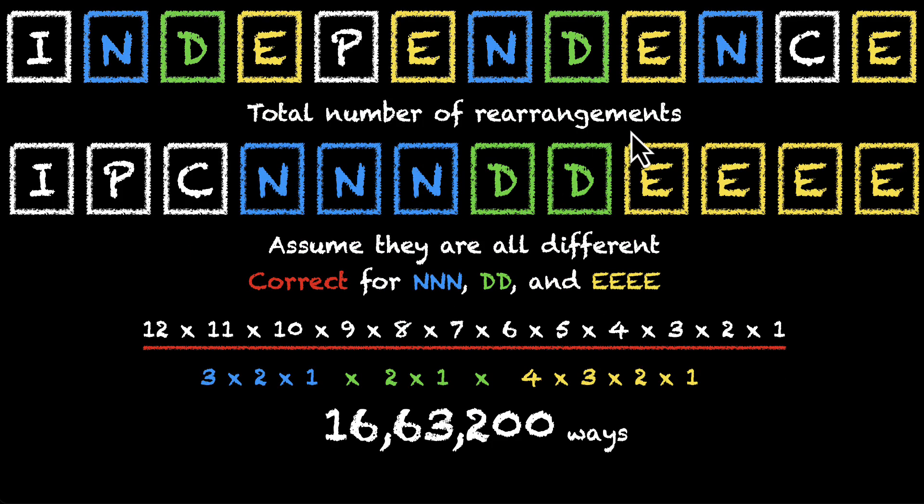To find the total number of rearrangements, we assumed that all of these letters are all distinct and then we made room for correction. We got 16.6 lakh ways.